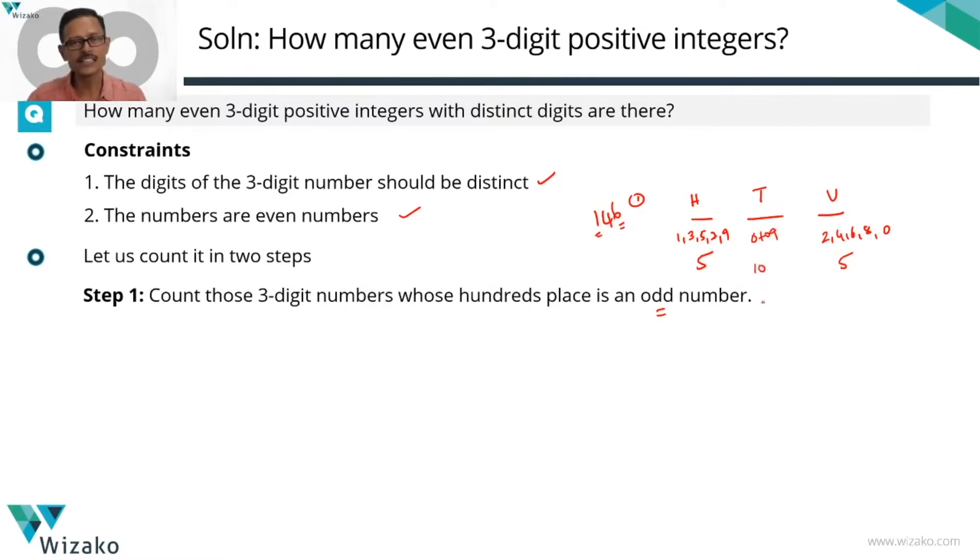But the distinct digits, that constraint comes into picture. Therefore, it cannot take a value that appeared in the hundreds place, nor can it take the value that appears in the units place. So two values are removed from it. So how many possible values exist for the tens place? We have eight possible values.